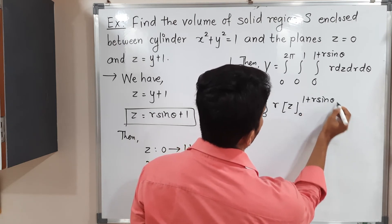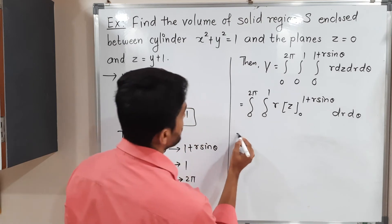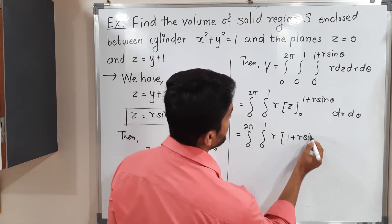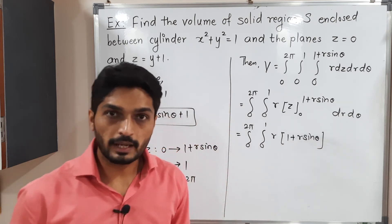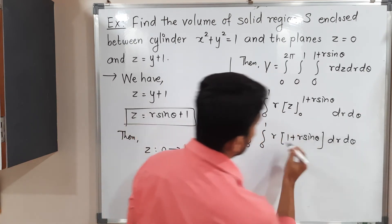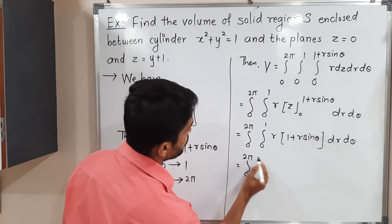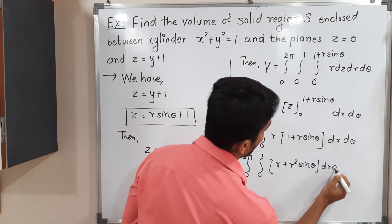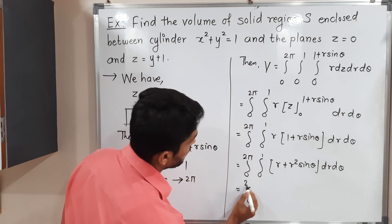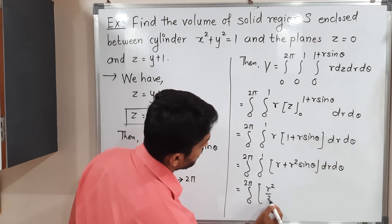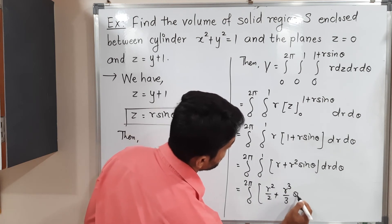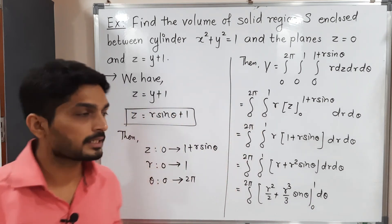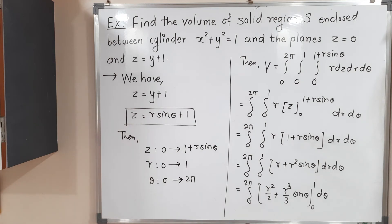Integrating first with respect to z: r is constant, and the integral of dz is z. Evaluating z from 0 to 1 + r sinθ gives r(1 + r sinθ). Expanding the product: r + r² sinθ. Integrating with respect to r: integral of r is r²/2, integral of r² is r³/3, so we get r²/2 + (r³/3)sinθ evaluated from 0 to 1.